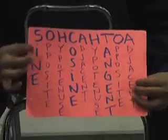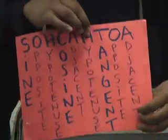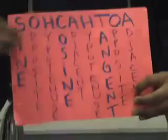So the first one is sine, which is opposite over hypotenuse. The next one is cosine, which is adjacent over hypotenuse. And the last one is tangent, which is opposite over adjacent. So this is how to get SOHCAHTOA.